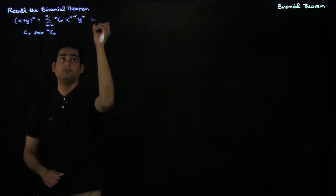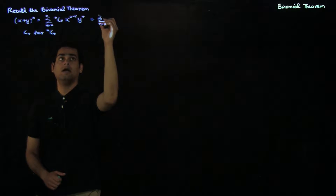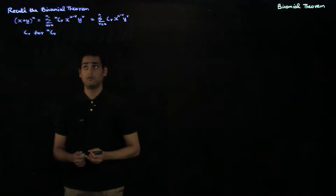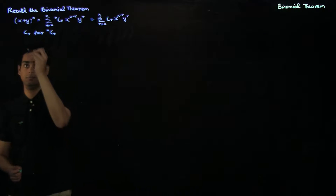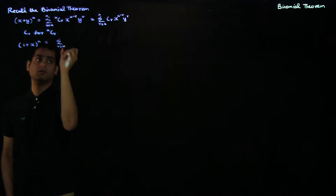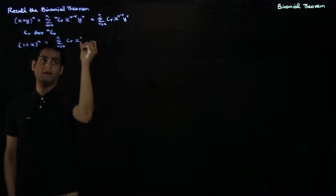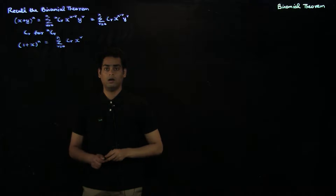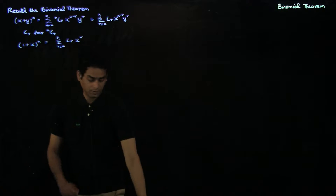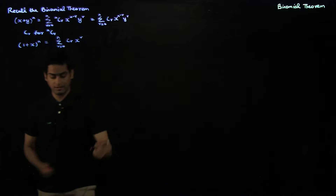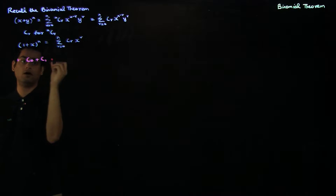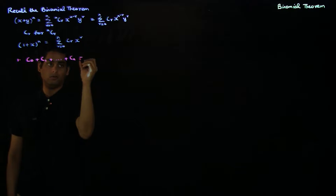We can write the binomial theorem more succinctly as summation r equals 0 to n, cr, x^(n-r), y^r. Also note the following consequence: (1 + x)^n = summation r equals 0 to n, cr, x^r. We will be using this result quite a bit in this lecture. The first identity we want to derive is: c0 + c1 + ... + cn = 2^n.